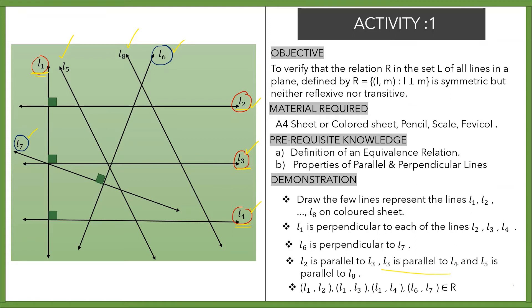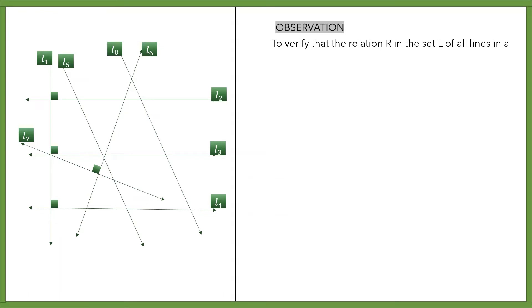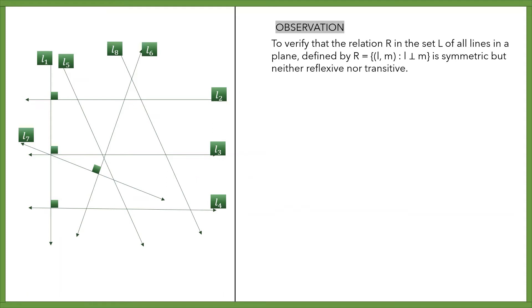In each of these cases — L1 & L2, L1 & L3, L1 & L4, and L6 & L7 — the lines are perpendicular to each other. Now, looking at all the lines on the left side of the sheet, we move to the observation part. We will verify that the relation R defined by L is perpendicular to M is symmetric but neither reflexive nor transitive.